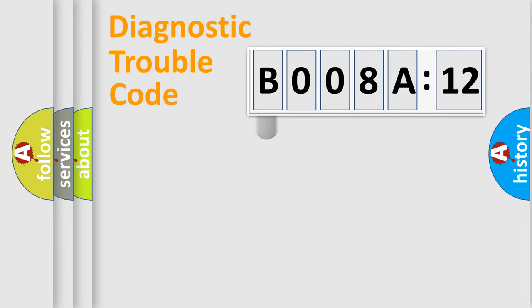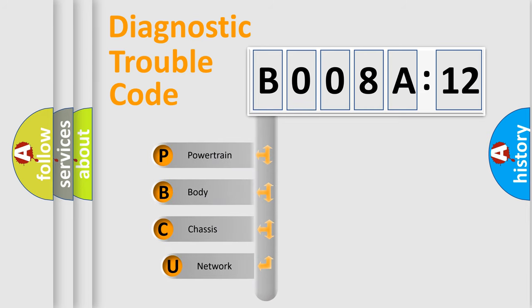First, let's look at the history of diagnostic fault code composition according to the OBD2 protocol, which is unified for all automakers since 2000. We divide the electric system of automobile into four basic units.